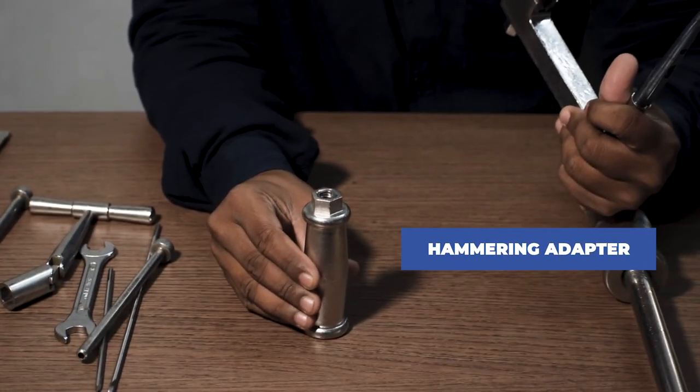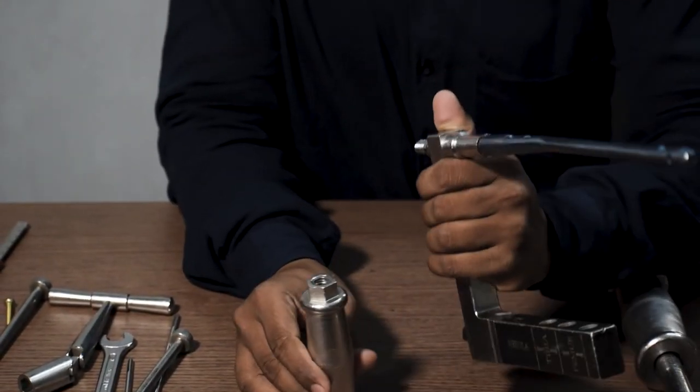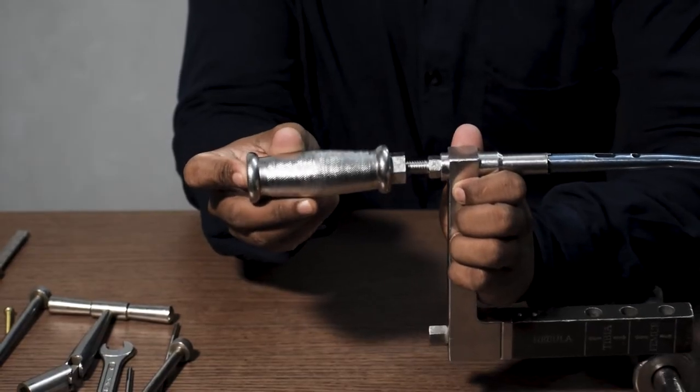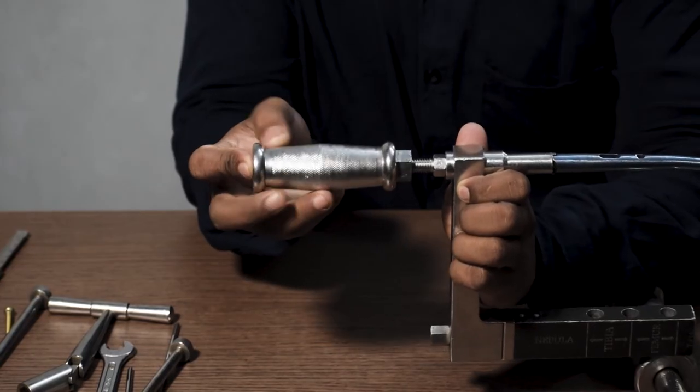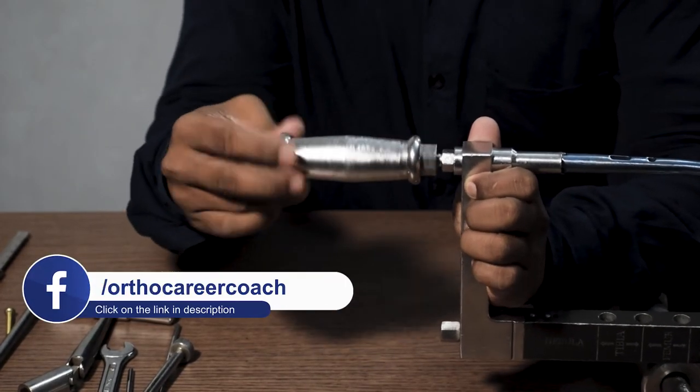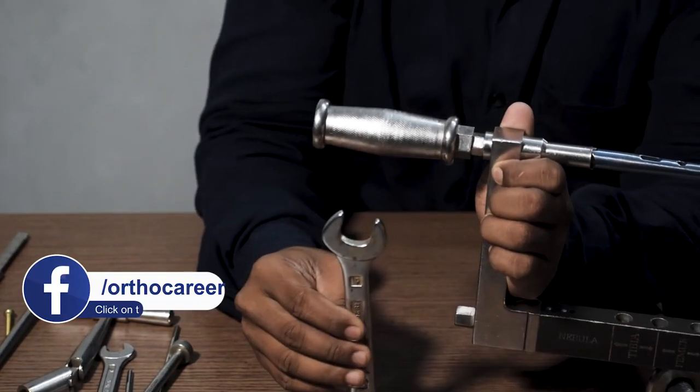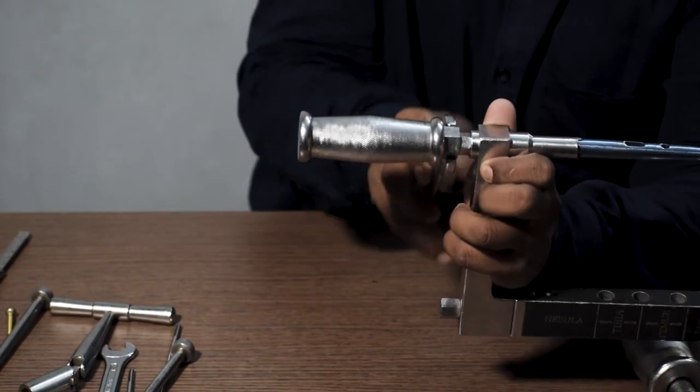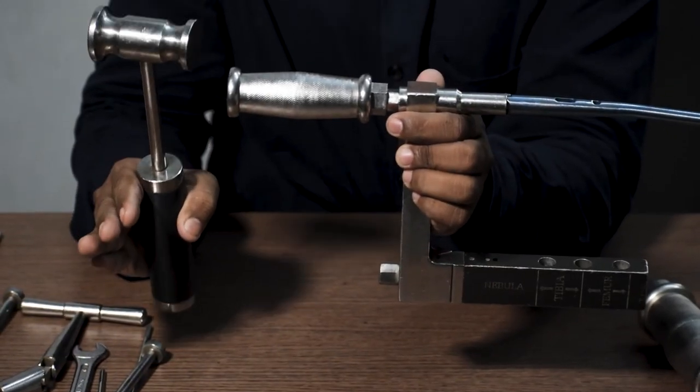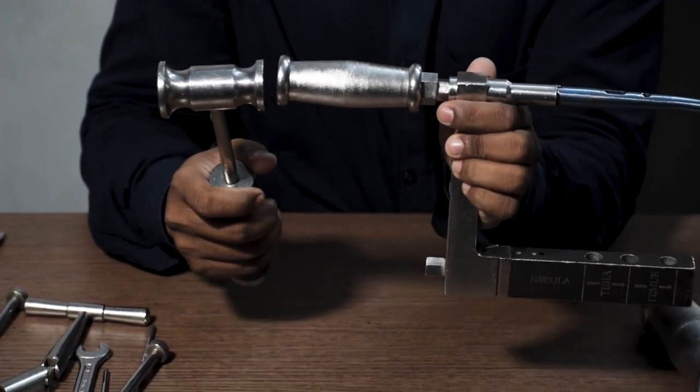This is a hammering adapter. This is used to do the hammering. This gets attached in the conical bolt of the jig like this, and further tightened and locked with the help of a spanner. During the entry of the nail in the medullary canal, gentle hammering like this.